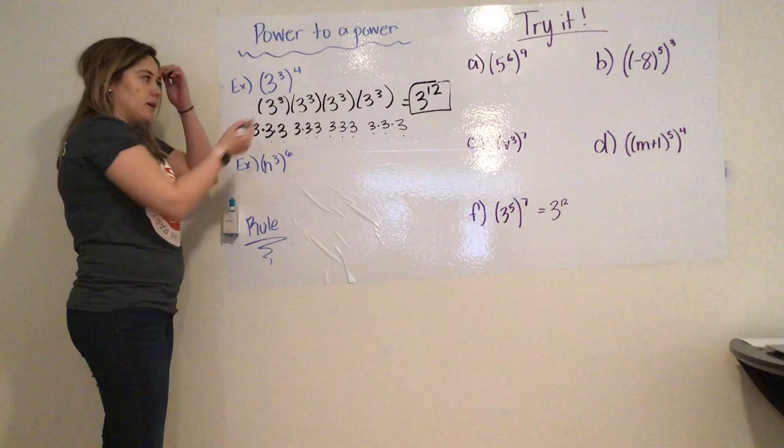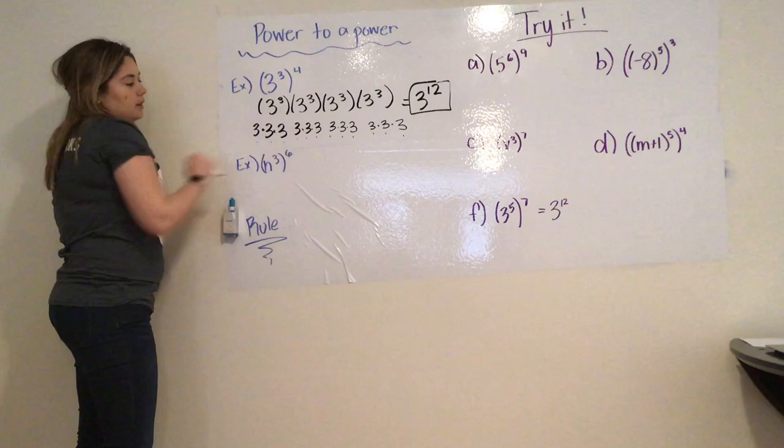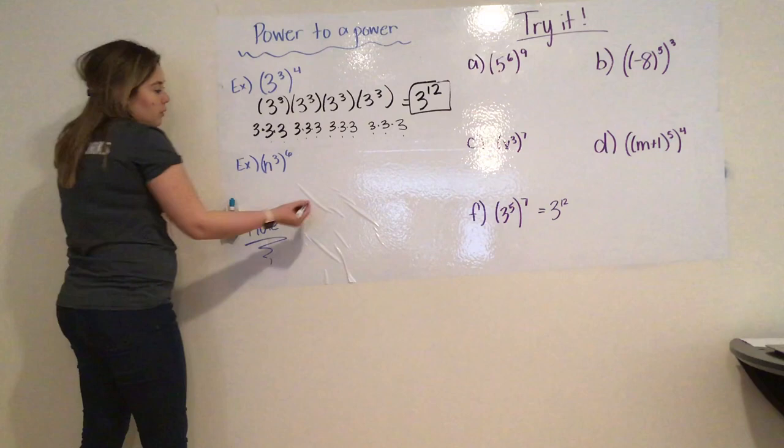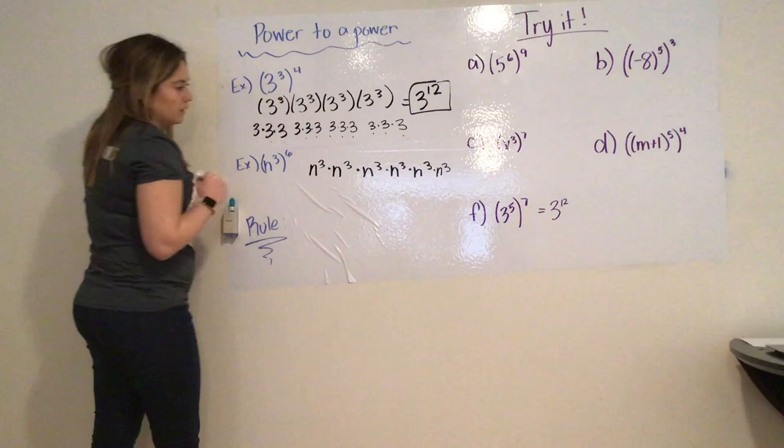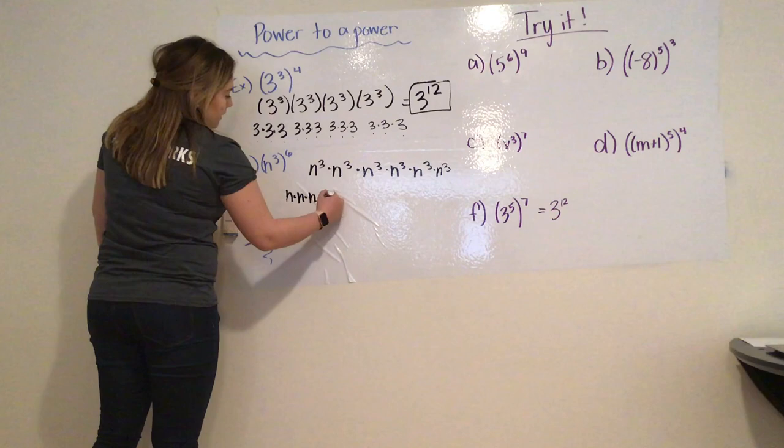This next one is n to the 3rd to the power of 6. Same thing as we did up here. We know that n to the 3rd is being multiplied a total of 6 times. Same thing again, it would be n that many times.